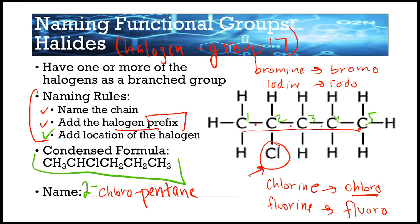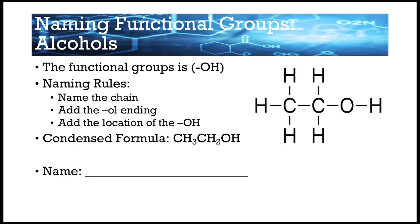Each functional group has its own naming rules, so it's not something you need to memorize entirely — Table R has an example of what the name looks like and is a great resource. The next group is called the alcohol group. The alcohol functional group is the OH group. This OH group on top of a hydrocarbon is the alcohol group.